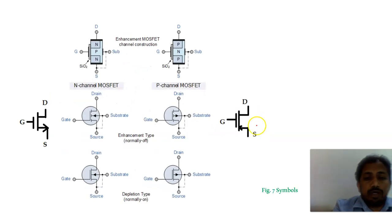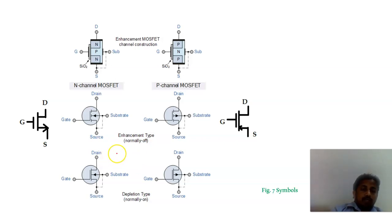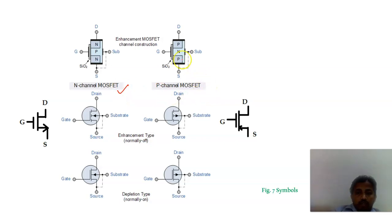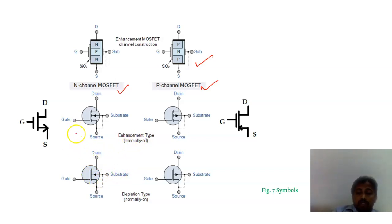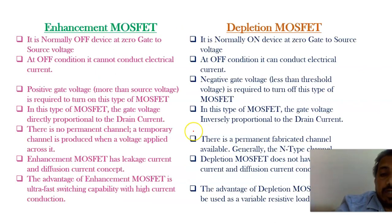For N-channel MOSFETs, we have N-type dopings on a P-type substrate. For P-channel MOSFETs, we have P-type dopings on an N-type substrate. Regarding circuit symbols: for enhancement MOSFETs, there is no line in the channel region; for depletion MOSFETs, there is a broader or thicker line. These N-channel and P-channel symbols are used in circuit representation.